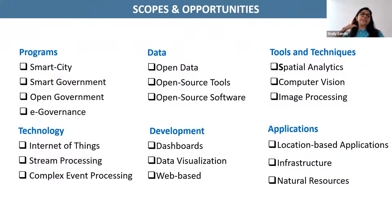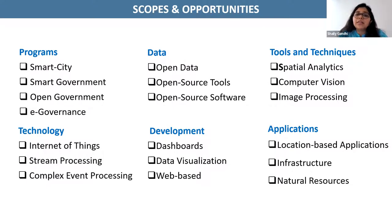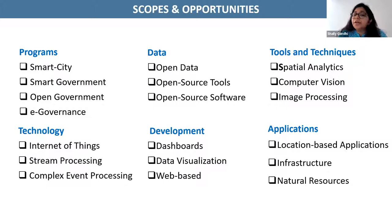Looking at the scopes and opportunities, programs like smart cities, smart government, open government, and e-government have come up in the past few years and talk about how this technology can be leveraged to get better and smart decisions. The government has realized that geospatial technology not only gives accurate results but also reduces the efforts needed to take effective decisions made on the basis of geospatial datasets. There is a lot of talk around open data, open source tools to be incorporated, and open source softwares to be developed to cater to major real-life problems.